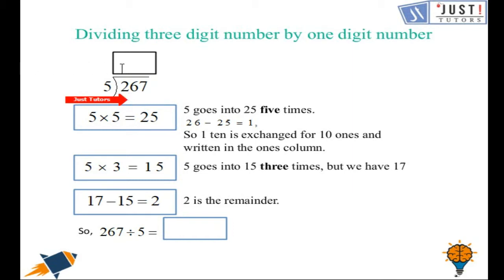We have a leftover of one. We put five there and carry one to the seven. Five goes into seventeen three times because five times three is fifteen. If we subtract seventeen take away fifteen, we get a remainder of two. So 267 divided by five gives us fifty-three with a remainder of two.